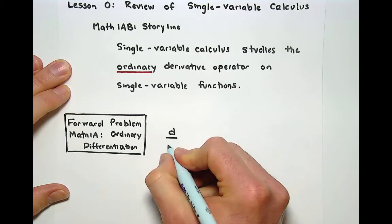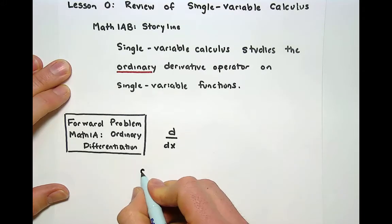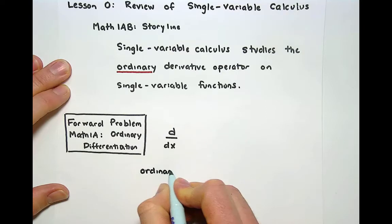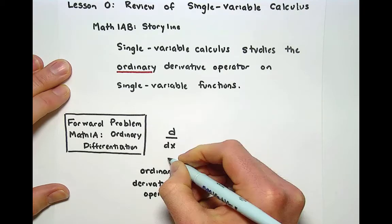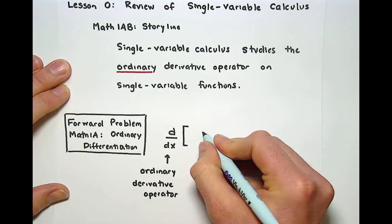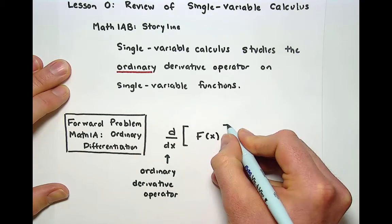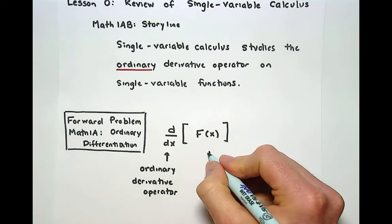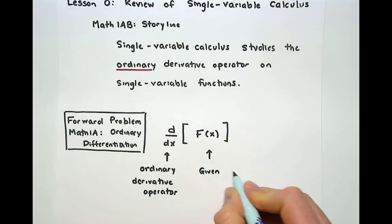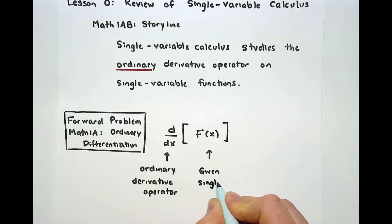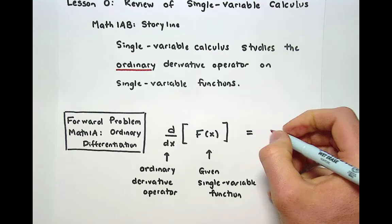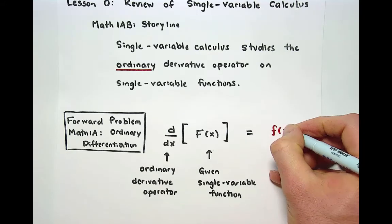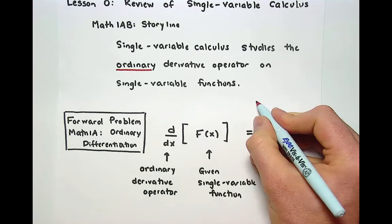In this forward problem you take the ordinary derivative operator which is what you constructed in Math 1A. You apply it to a given single variable mama function. And then the forward problem is to produce the baby function which is an unknown and desired derivative.